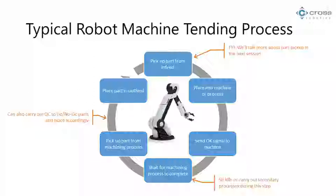While waiting for the machining process to complete, a robot can sit idle, or it can do other things — like a QC process, or queuing up the next part. If you have a dual end effector with two grippers, it can grab the next part during the process and shave off cycle time. You can also add another step: if QC needs to happen in a certain place, the robot does a QC process between picking up the part and placing it in the outfeed, which might be split into accepted parts and a reject bin.